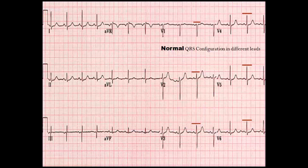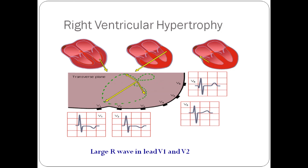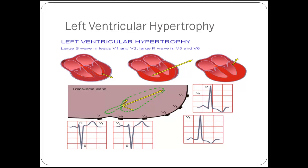In the normal QRS configuration, in V1 and V2 the S is really deep and the R is short. In V3 and V4, the R and S are roughly equal. In V5 and V6, there's a really tall R. For right ventricular hypertrophy, there's a large R in V1 and V2. For left ventricular hypertrophy, there's a large S in V1 and V2 and a large R in V5 and V6. For left ventricular hypertrophy, the S wave at V2 plus the R wave at V5 should sum to greater than 35 millimeters.